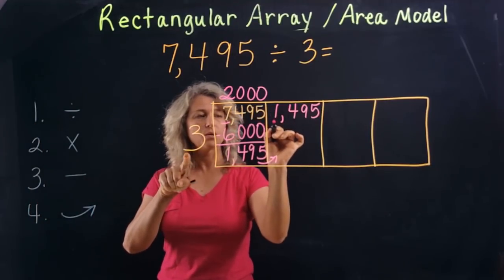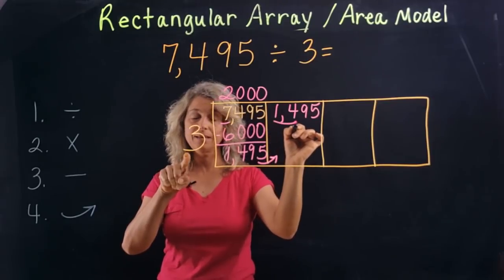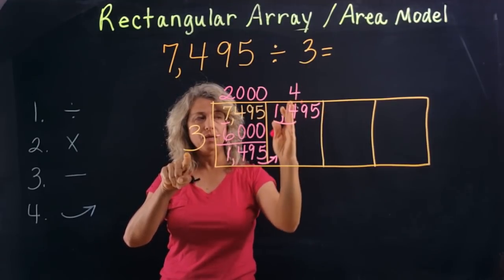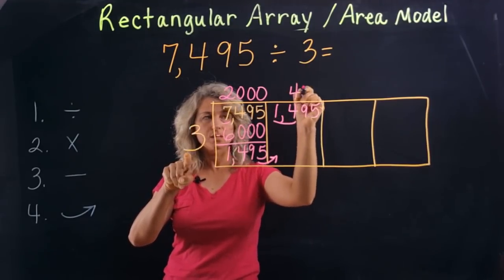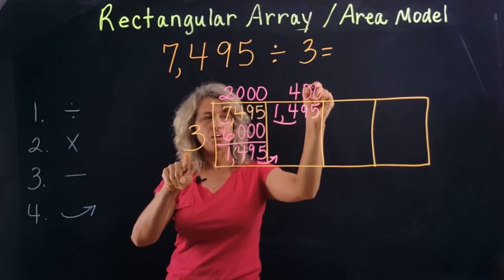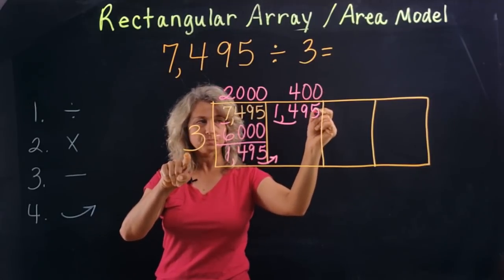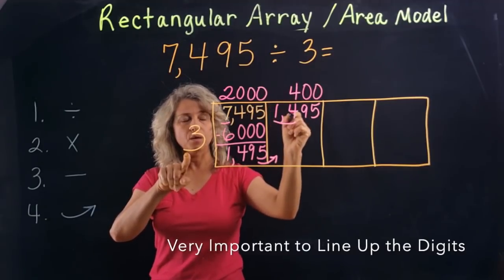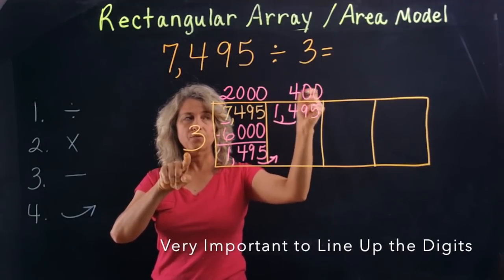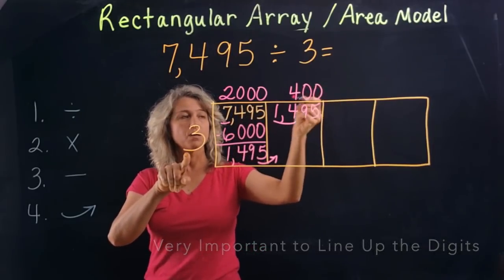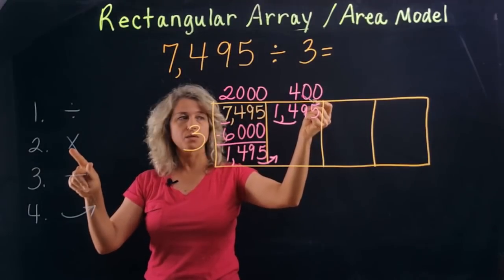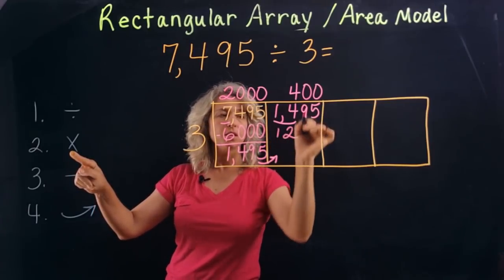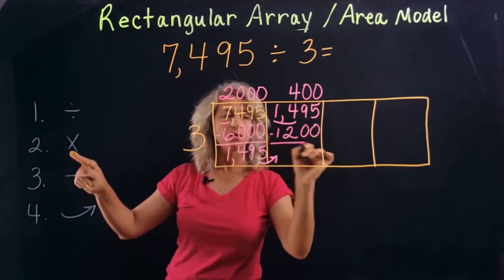Will 3 go into 1? No. But will it go into 14? Yes — it will go in there 4 times. I'm lining it up carefully because the 4 is in the hundreds place, so I'll add zeros above these two numbers. This is really important: if you don't line it up, you may forget how many zeros to put above the number, so be very careful. Step two: multiply — 3 times 4 is 12, and I'll bring the zeros down. Then subtract.